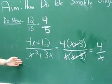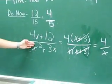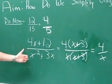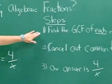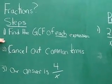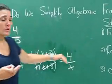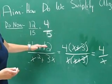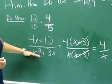So our answer in simplest form is 4 over x. So to review what we did, the first thing you do is you find the greatest common factor of each expression. Then you use that to factor the expression. You do that for the numerator and the denominator.